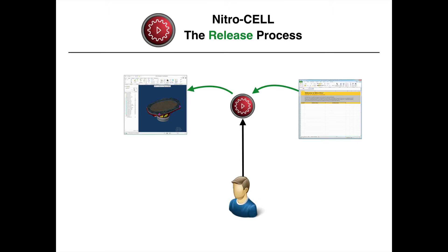Up to this point, we've been talking about sending data back and forth between an Excel document and your Creo session, which will produce the result you're looking for. But what happens if you want to send that data to somebody else, like a vendor, another department, or another user within the company? Typically in this case, you have to include everything with it so that they can actually bring it up and regenerate properly. We actually solved that problem by creating something called the Nitrocell release process.